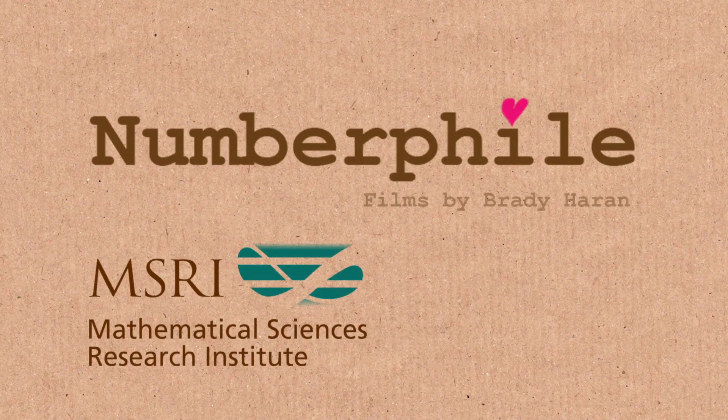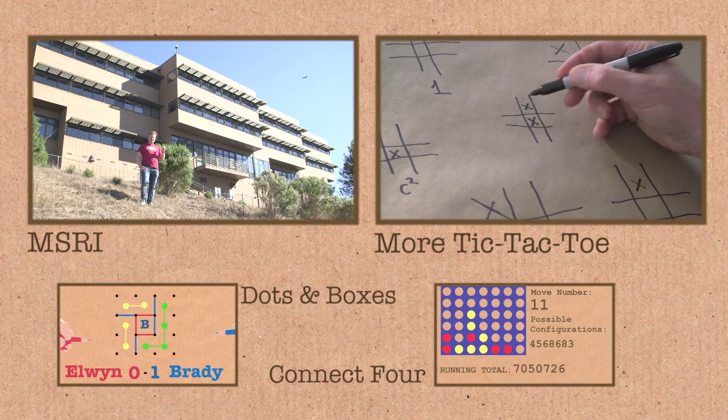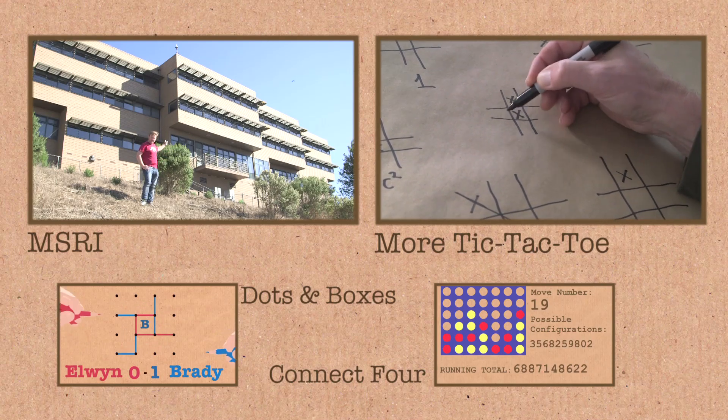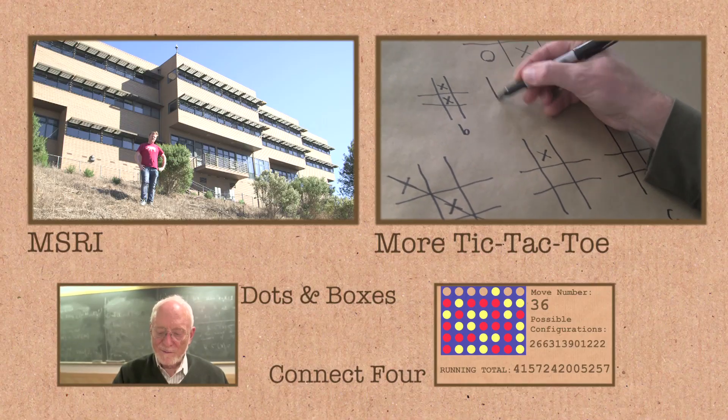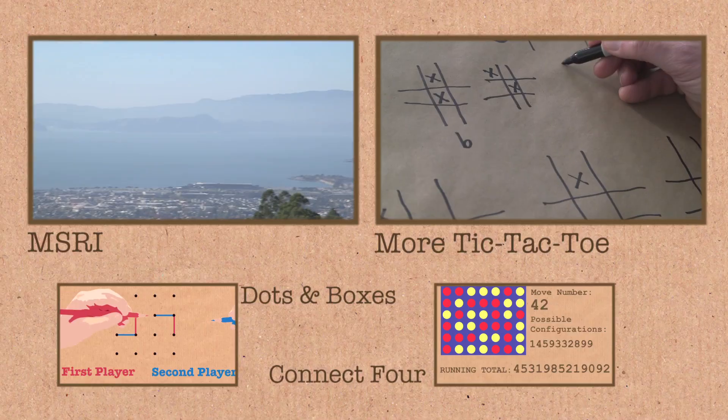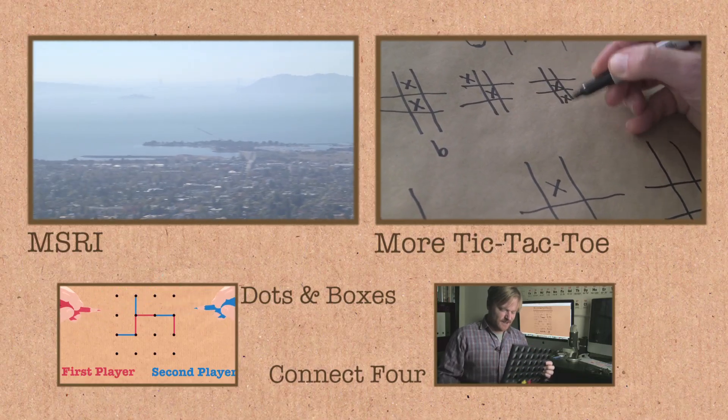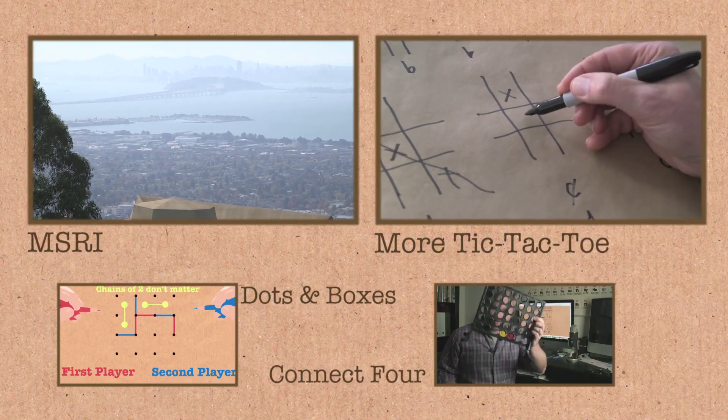Numberphile wouldn't be possible without support from the Mathematical Sciences Research Institute, MSRI. That's the building right there. If you'd like to find out more about them, I've put some links under the video. But for now, let's just admire the view they have over the San Francisco Bay. It's incredible. And Golden Gate Bridge, Alcatraz, San Francisco City, amazing.